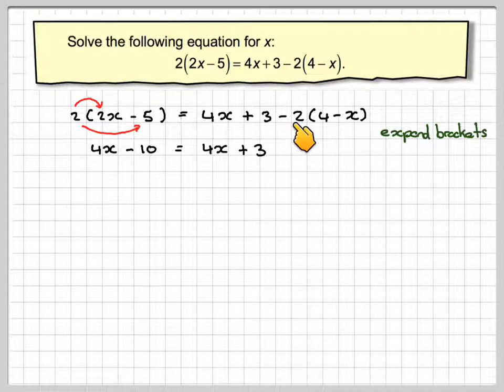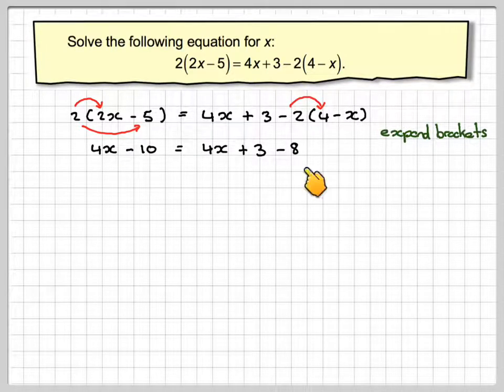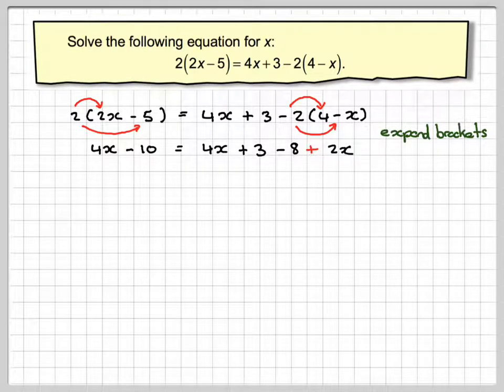And now we have to expand minus 2 times 4 minus x. So minus 2 times 4 gives me minus 8. And then a minus times a minus will give me a plus. And it will be a plus 2x.